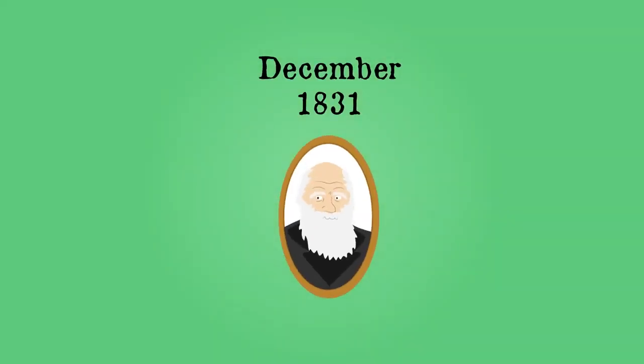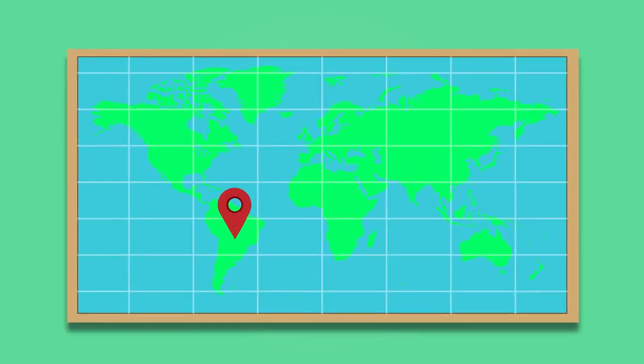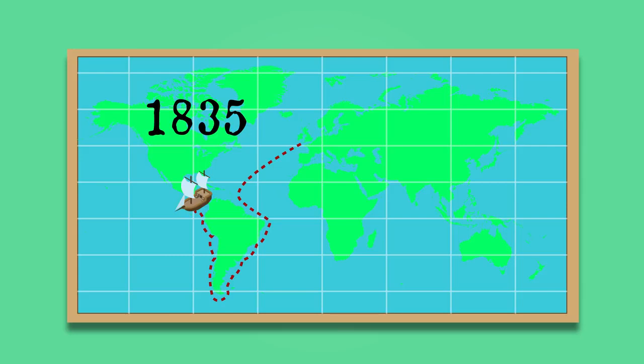In December 1831, a naturalist called Charles Darwin boarded the HMS Beagle bound on a surveying voyage to South America. Whilst the ship and crew carried out coastline surveys, Darwin was free to explore the islands en route. In 1835, the Beagle arrived at the Galapagos Islands near Ecuador.